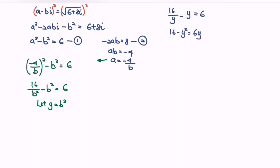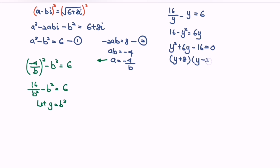Rearrange the equation to get y squared plus 6y minus 16 equals 0. Now factorize: y plus 8 multiplied by y minus 2 equals 0.